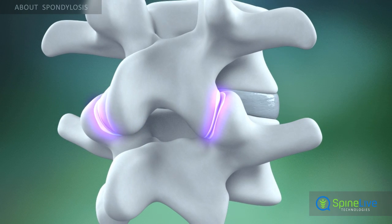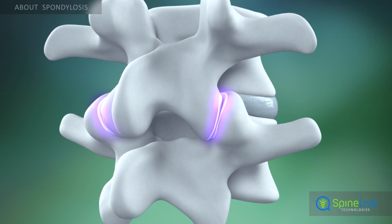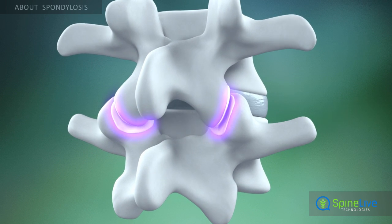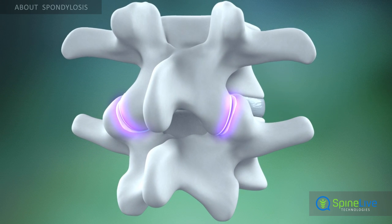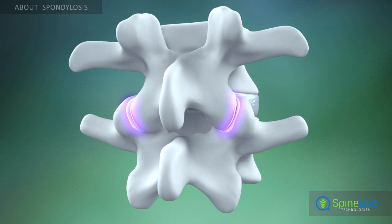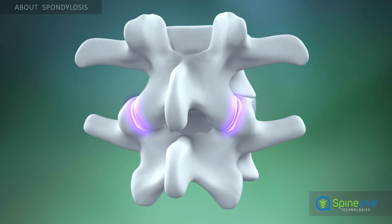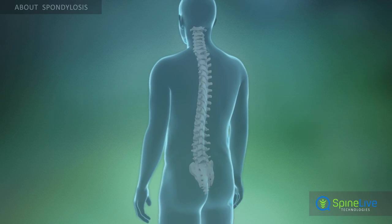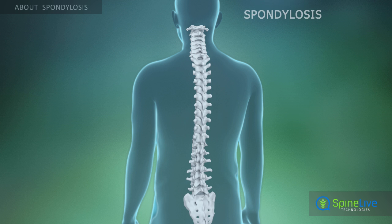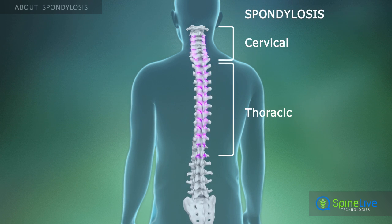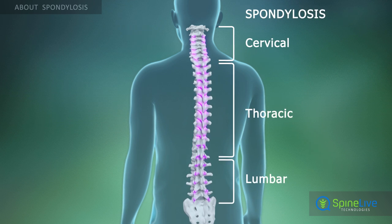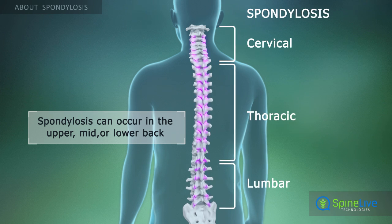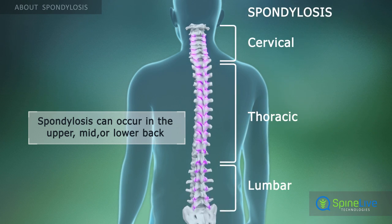Spondylosis is a term used to describe different changes in your spinal joints. It may be caused by aging, degenerative changes, or osteoarthritis. There are three general types of spondylosis — cervical, thoracic, and lumbar. The type depends on which spinal region is involved in the pathological process.